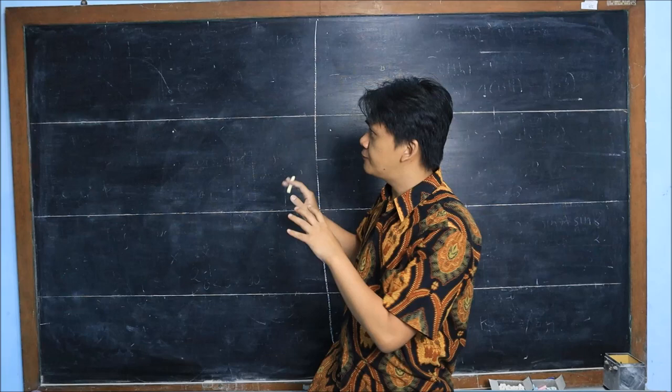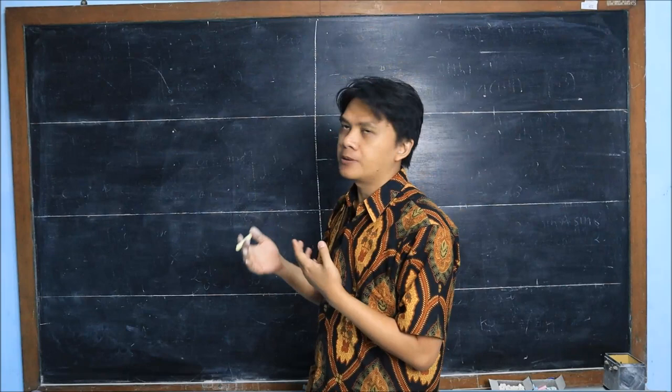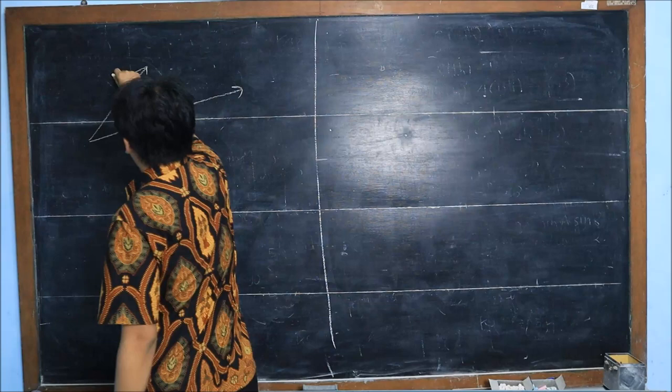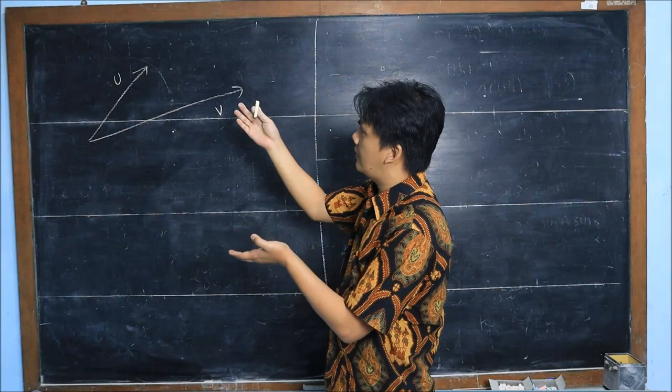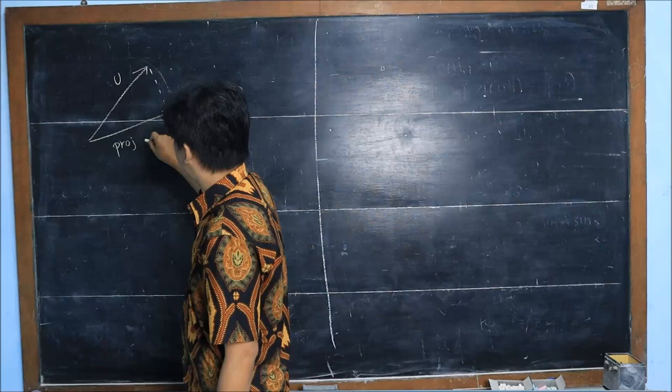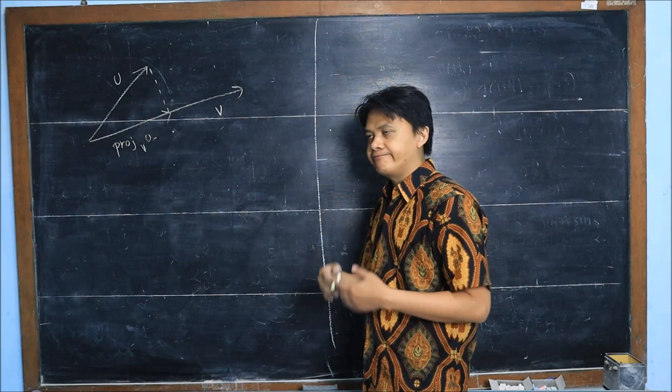We'll prove it by using the property of projection, specifically the projection of a vector onto another vector. Let me remind you, if we have two vectors u and v, we can project one vector onto the other to get a vector that we call the projection of u onto v.